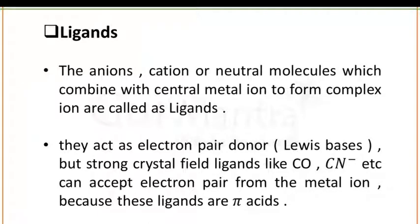Now, what are ligands? The anions, cations, or neutral molecules which combine with the central metal ion to form a complex ion are known as ligands. These ligands act as electron pair donors, and when compounds are electron pair donors, they are known as Lewis bases. However, strong crystal field ligands like carbon monoxide, CN- etc. can accept electron pairs from the metal ion because these ligands are pi acids.